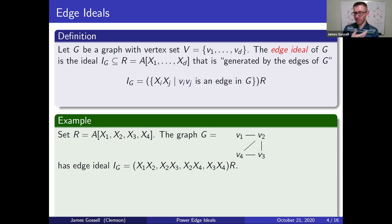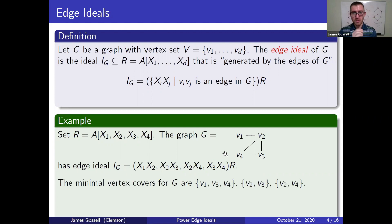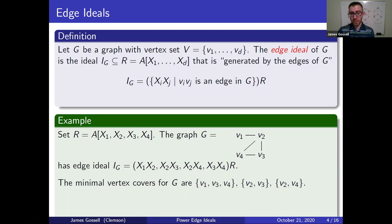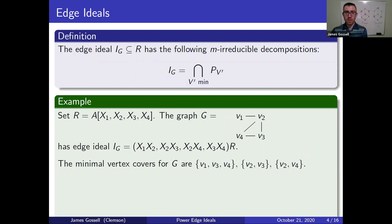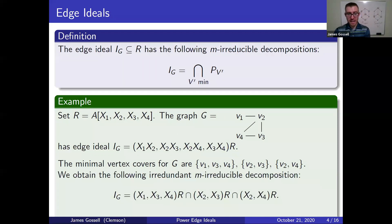How does the structure of the graph relate to the algebraic properties of the ring? This is where we revisit the minimal vertex covers. The edge ideal will always have the following irreducible decomposition: it is the intersection of all ideals generated by the variables corresponding to vertices in each minimal vertex cover. So this edge ideal — which can be written using edges of the graph — can also be written as the intersection of ideals ⟨x_1, x_3, x_4⟩, ⟨x_2, x_3⟩, and ⟨x_2, x_4⟩.